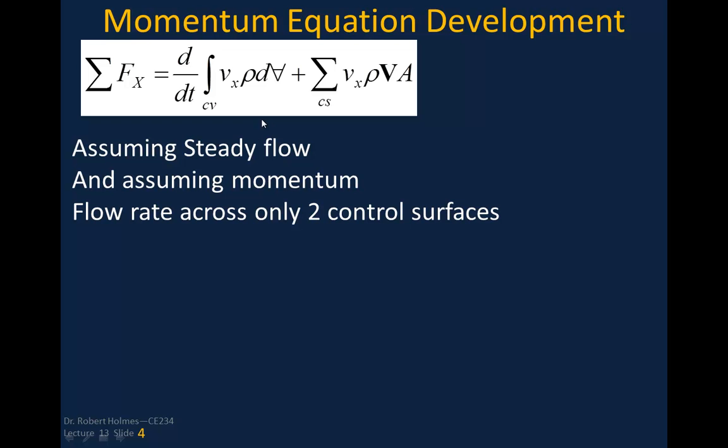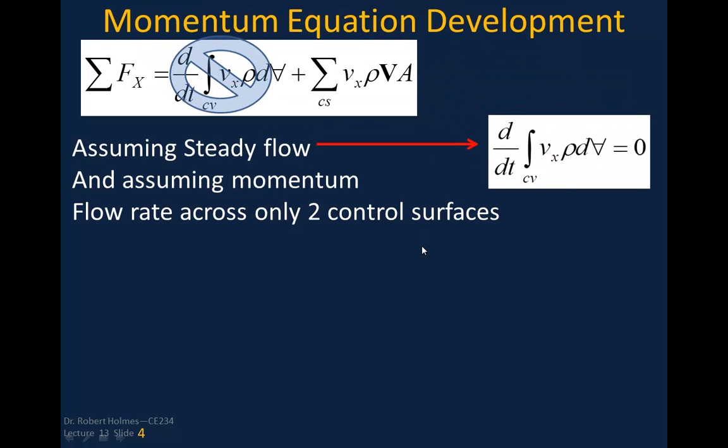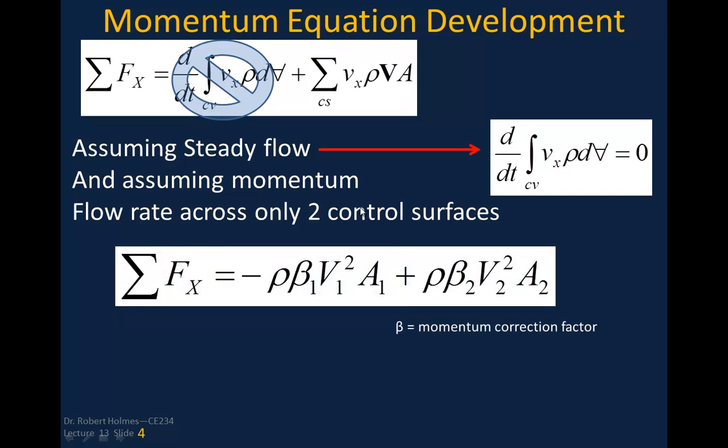If we look further and we assume that we have steady flow, we can get rid of the first term there, because we have no change with respect to time if it's steady flow. If we assume that the momentum flux is only occurring across two faces, so an upstream and a downstream like you would have in an open channel flow, we can write the sum of the forces is equal to this momentum on the upstream face, and it's negative because of the sign convention of the way we show the flux, plus that that's going across the downstream face too.